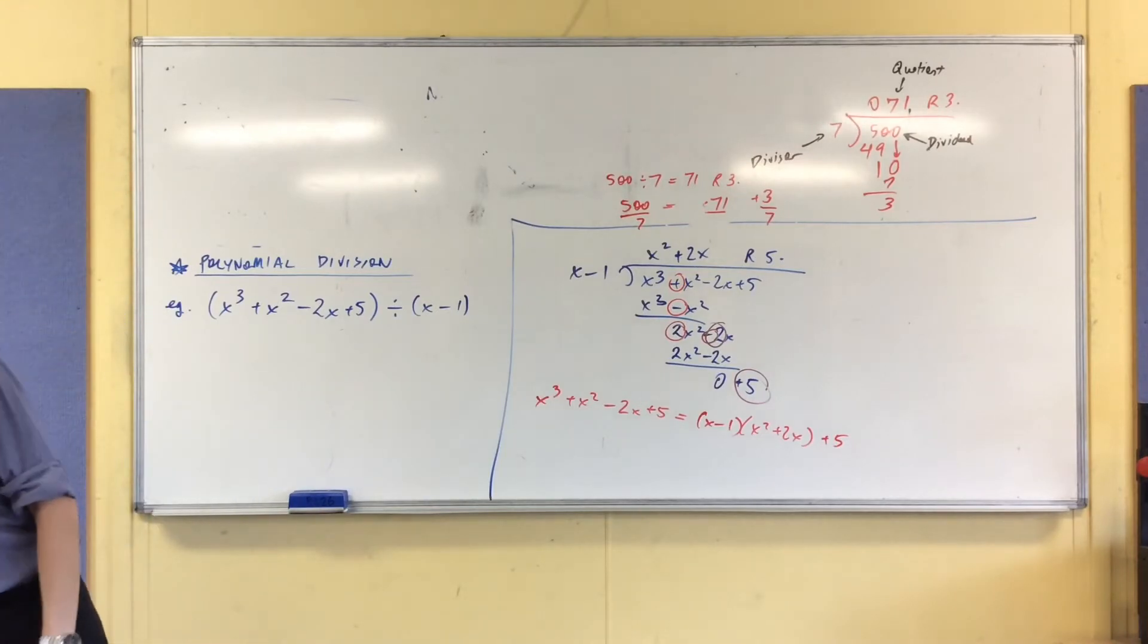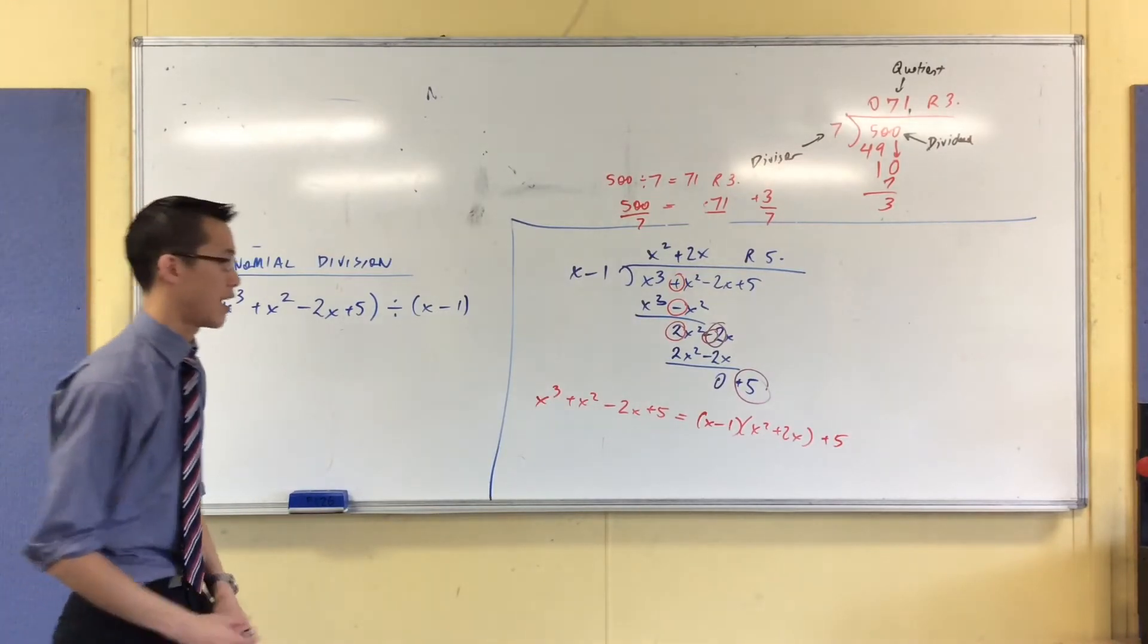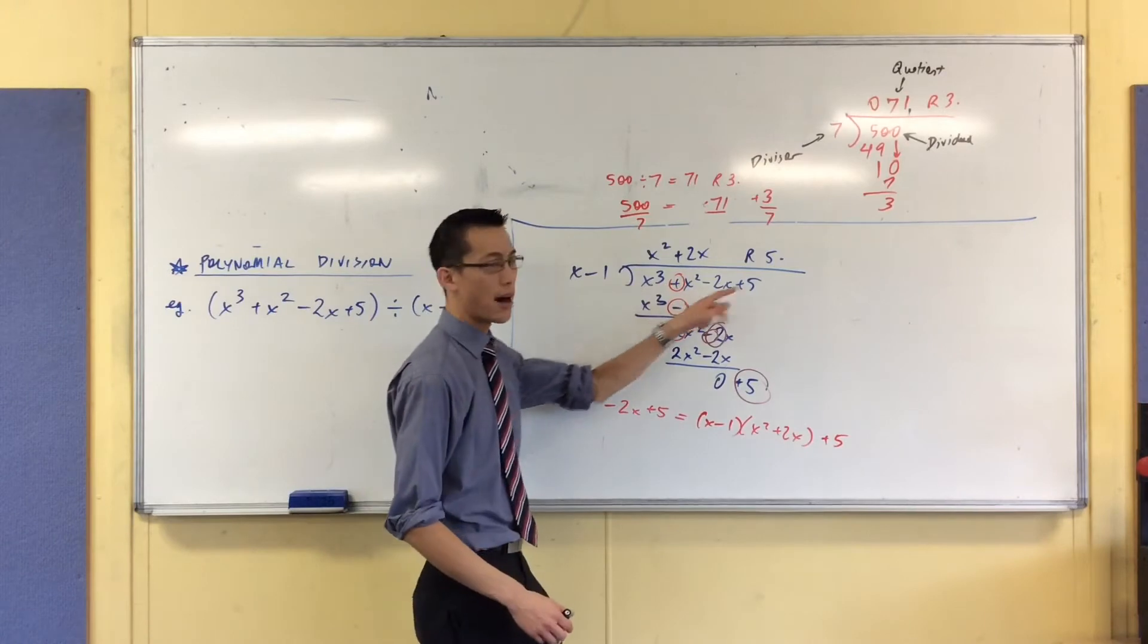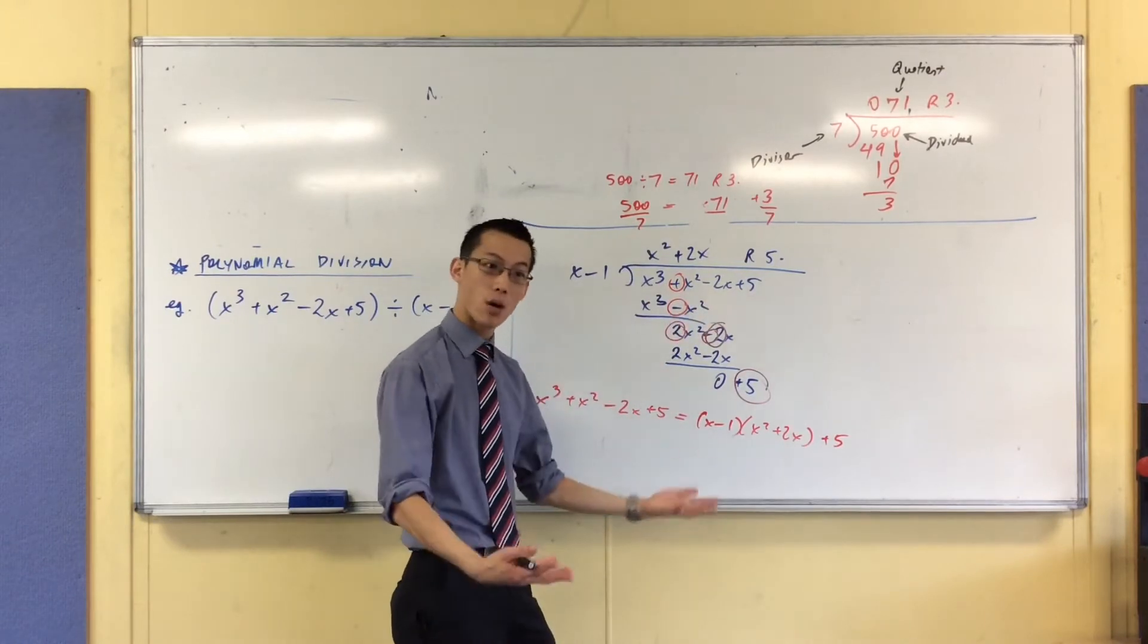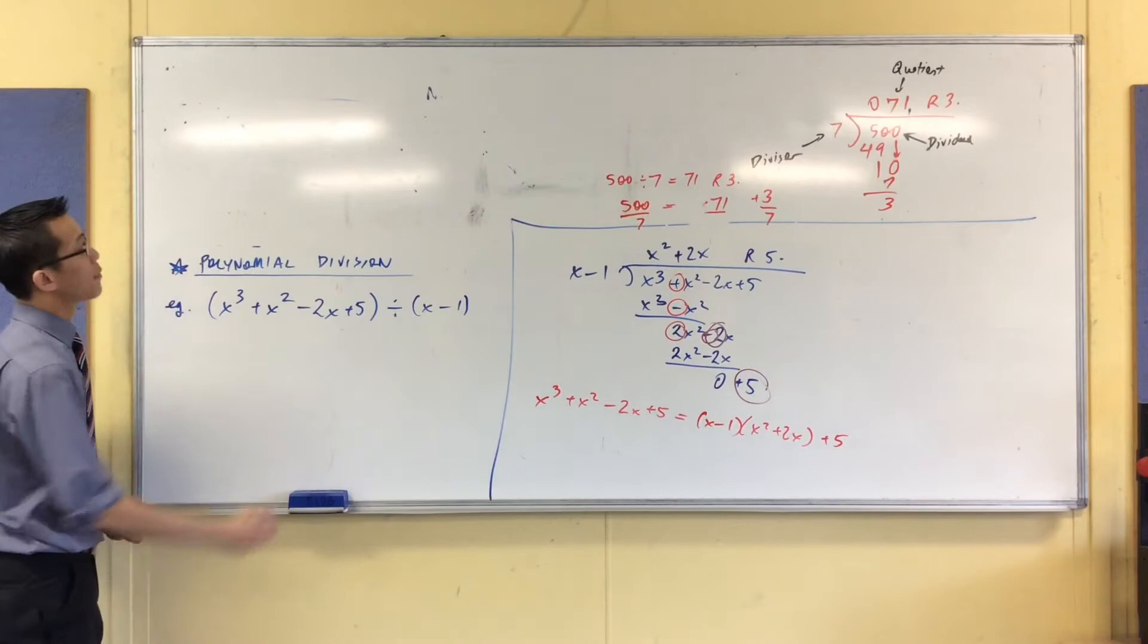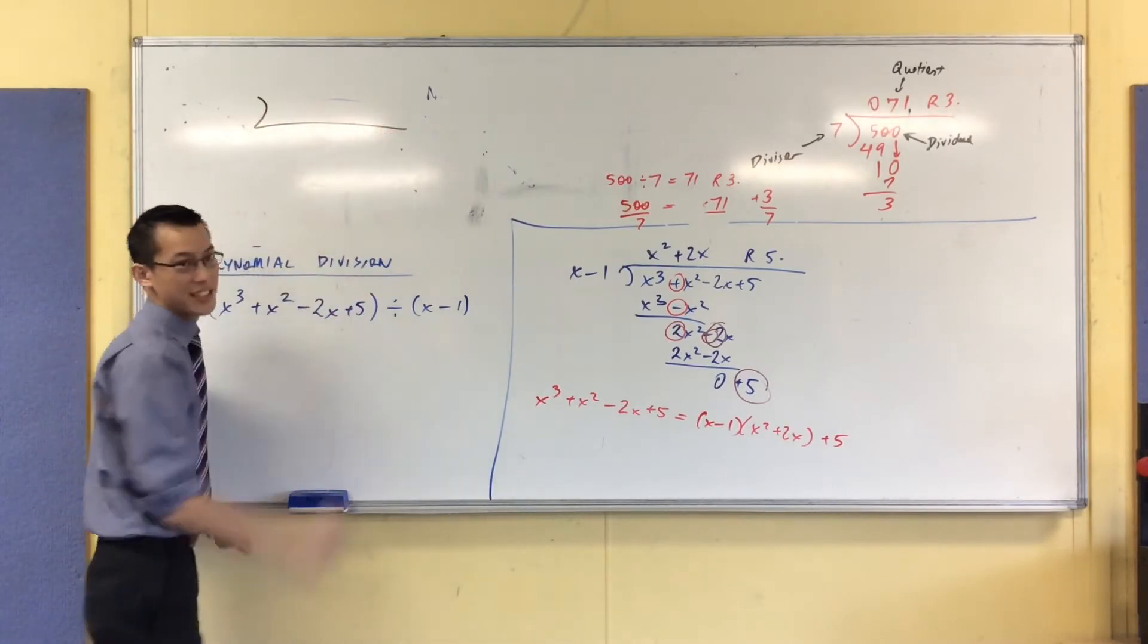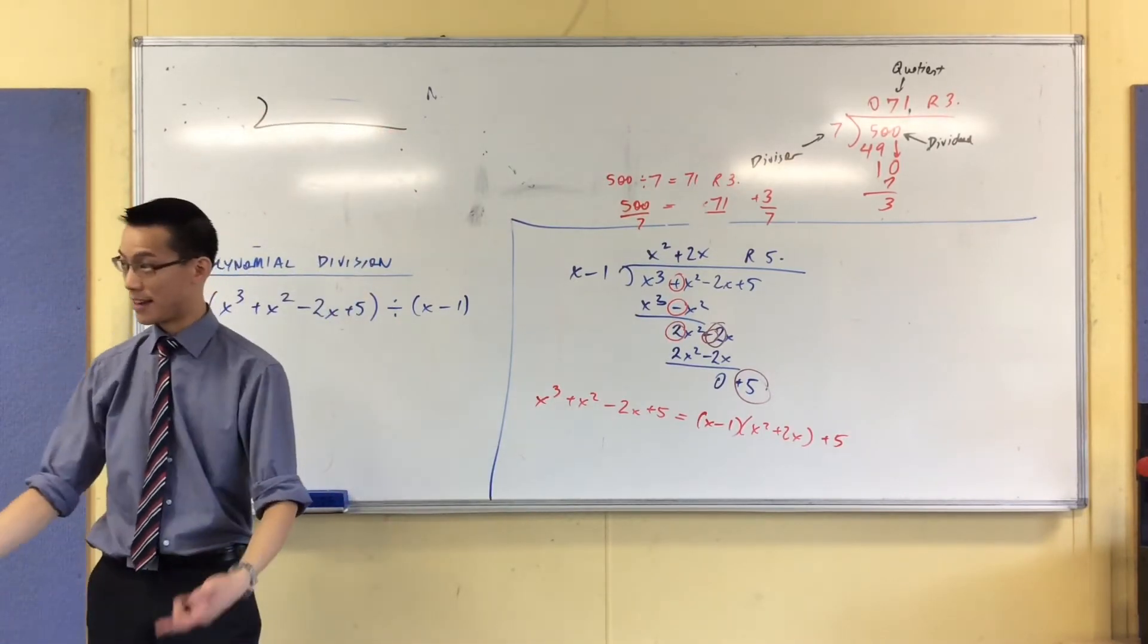So therefore, I can save myself a whole lot of time by writing just the important parts of the division, namely the coefficients. Okay? So here's the way I'm going to do this. I'm going to write a division sign, but to distinguish what's going on, I'm going to write it upside down.